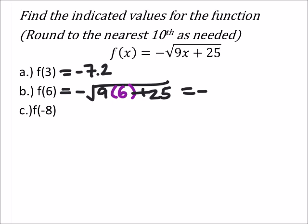So, this will equal the negative square root of 9 times 6 is 54, plus 25, 79, and I get